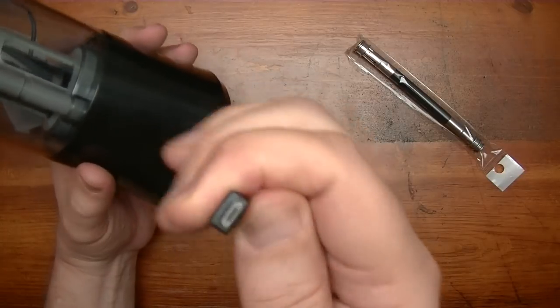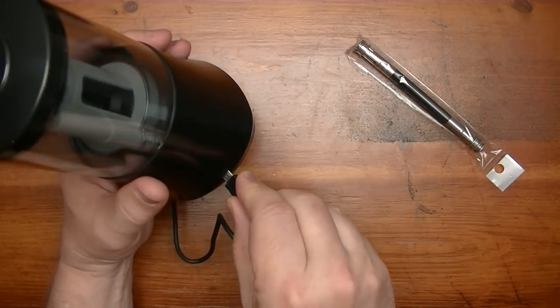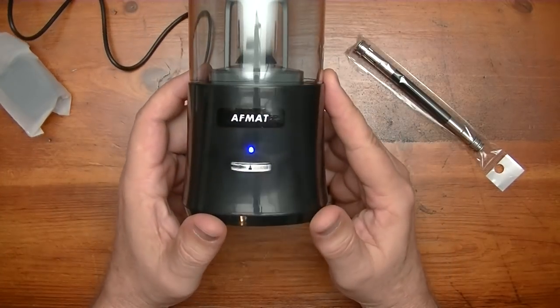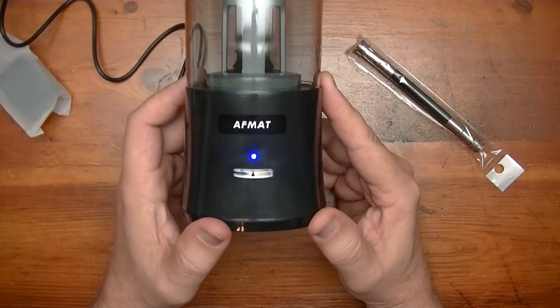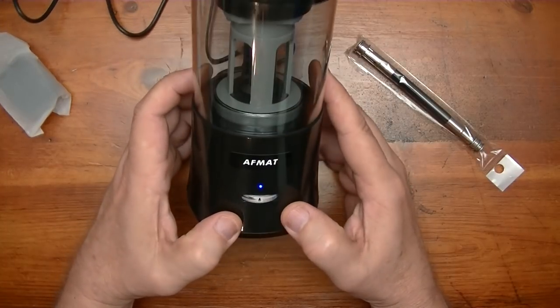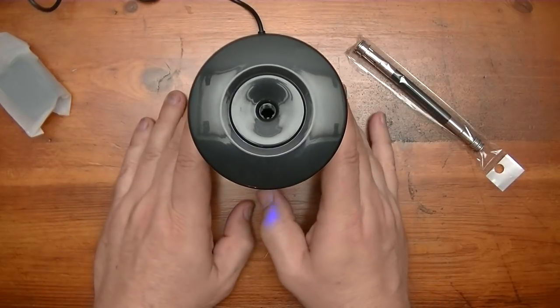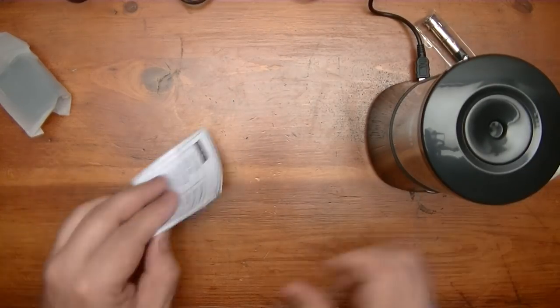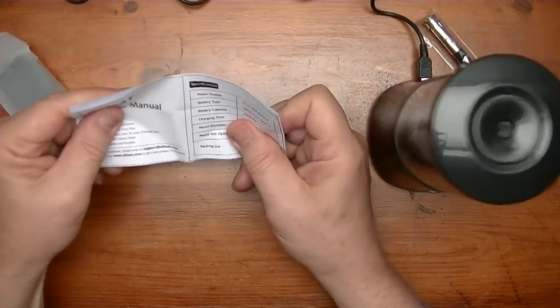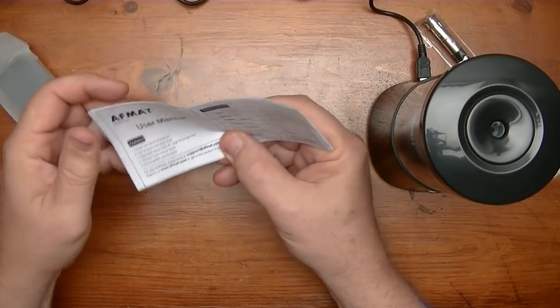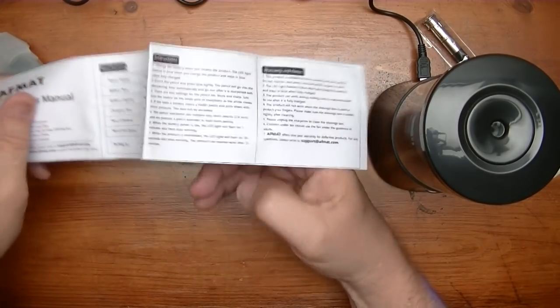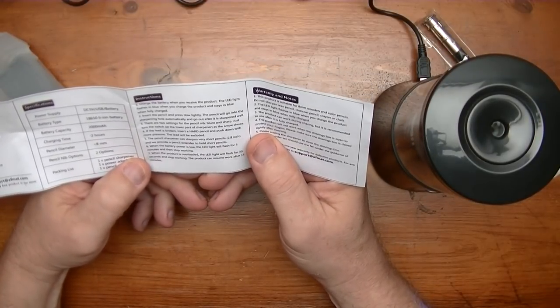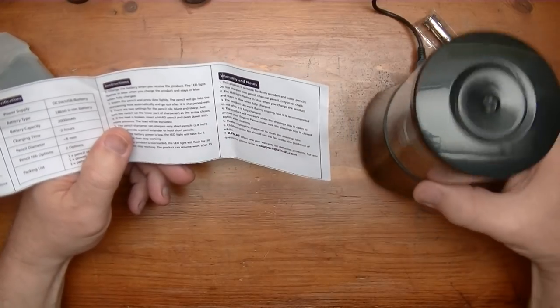Looks like it has a mini USB connection. So if you lose this you should be able to replace it pretty good. And then we have this little blinky blink here. Now of course, I would imagine that this thing is going to have to charge before we can use it. I guess I can read the instructions. So let's see what it says here. Rechargeable and portable. Yes. Okay, it says charge the battery when you receive the product. The LED light flashes blue.